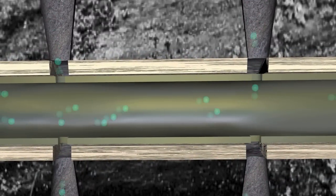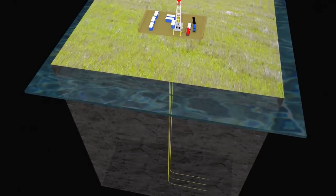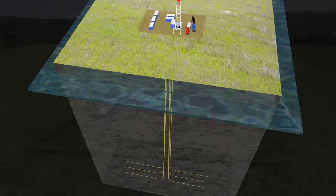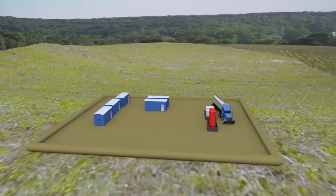Horizontally fractured well pads can be used for multiple wells. This means they leave a much smaller footprint on the natural environment than traditional vertical wells. Once the wells are drilled, the rig will be replaced by small wellheads, which will remain while the well is productive.